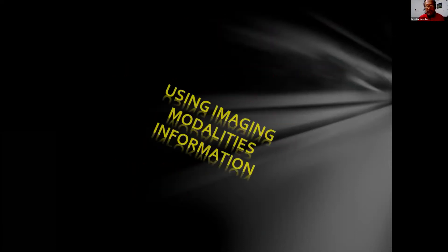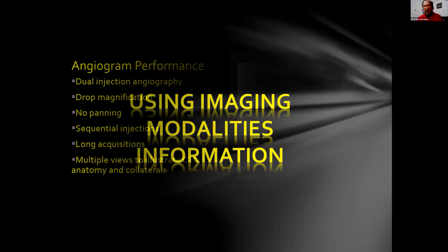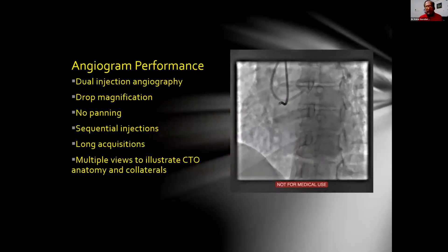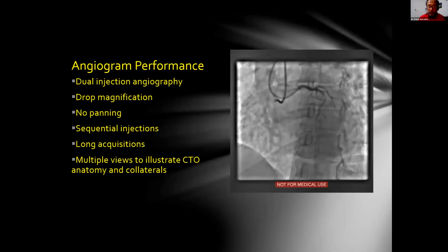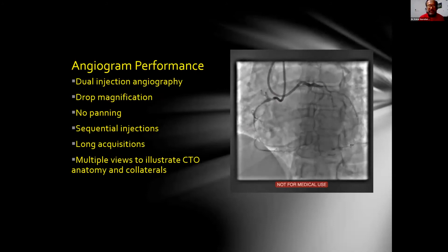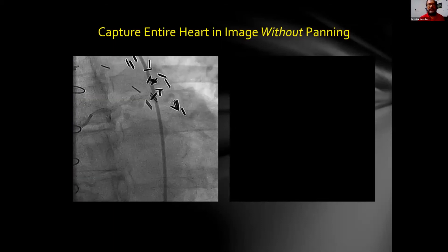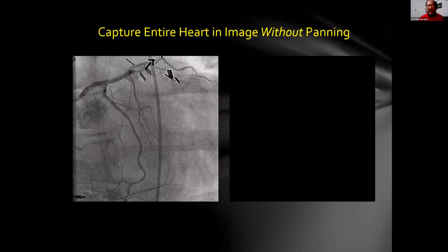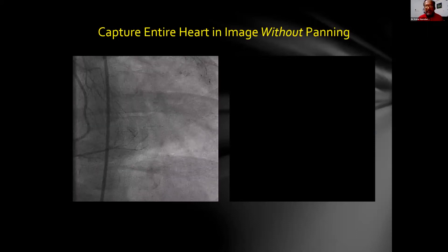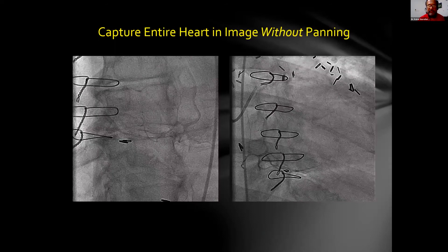First, using imaging modalities for information. You have to do the angiogram properly: dual injection, drop magnification, no panning, sequential injection, and long acquisition so you can see the CTO very clearly. This is a faulty angiogram, and this is the correct angiogram where you don't pan the table — you can see the CTO very well and the collaterals as well.